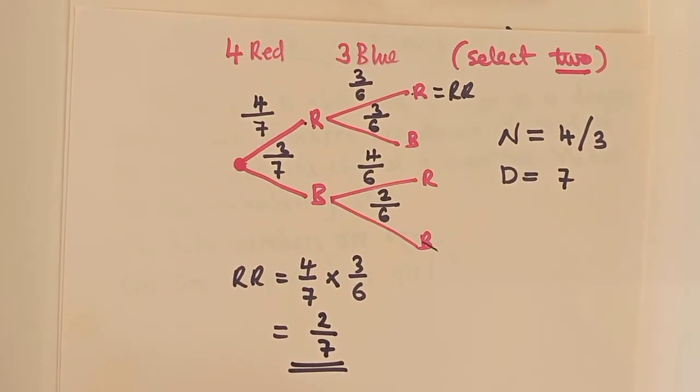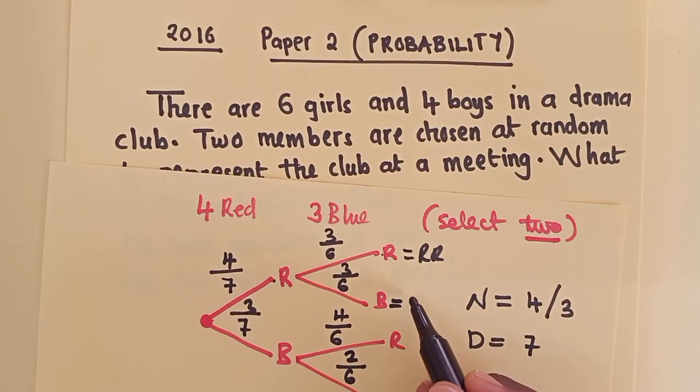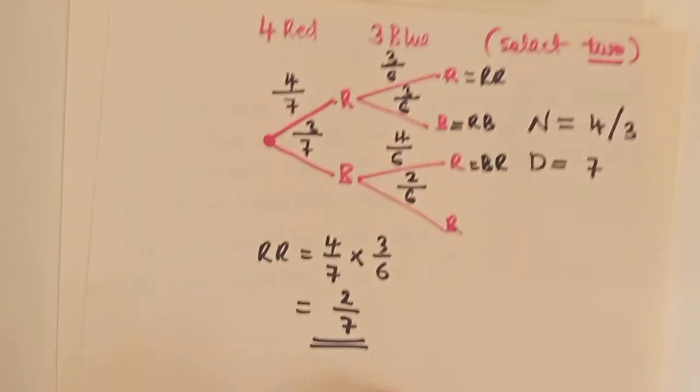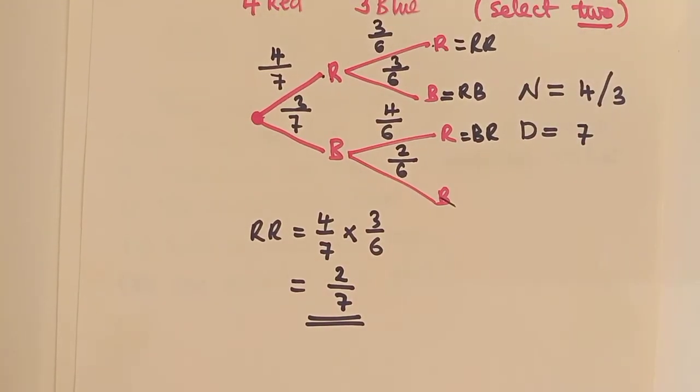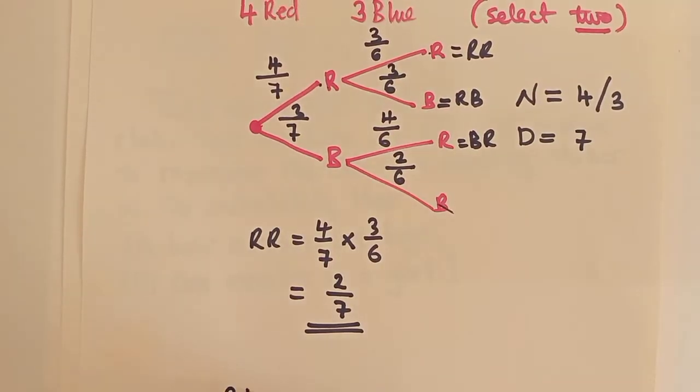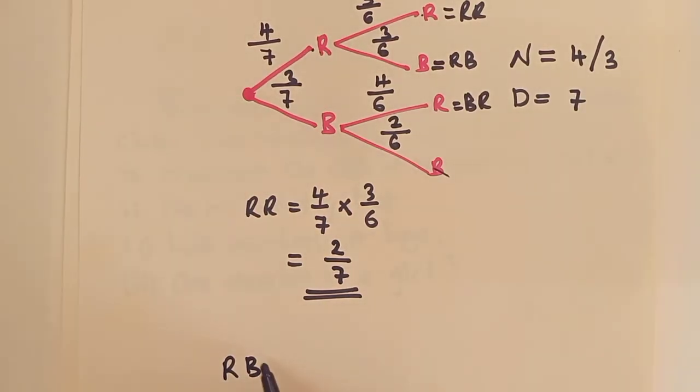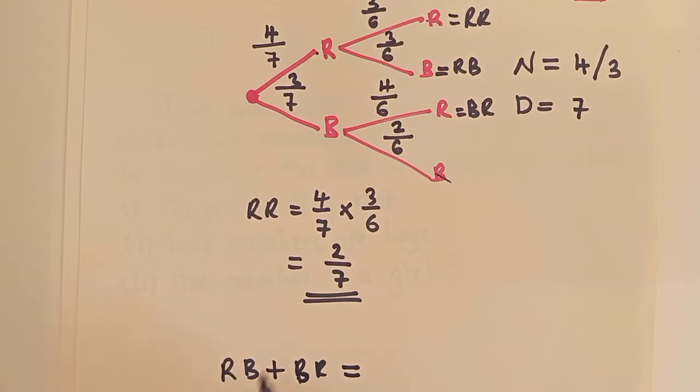If they say, what is the probability of picking different colors? So different colors, we have got a red, blue, blue, red. So there are two of them. So for different colors there, it will be those two. So it will be red, blue. You can see this red, blue plus blue, red.